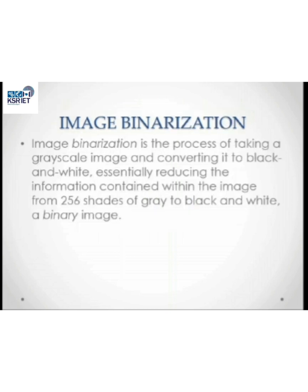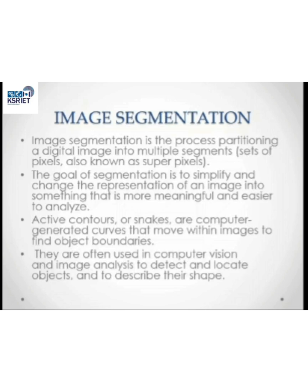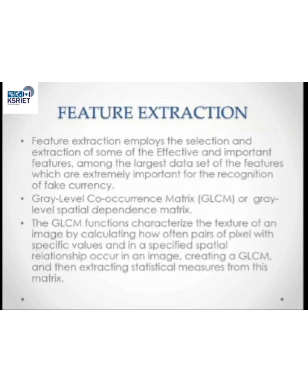Image binarization is the process of taking a grayscale image and converting it into a black and white image, essentially reducing the information contained within the image. Image segmentation is the process of partitioning a digital image into multiple segments to simplify and change the representation of the image. Feature extraction uses the Gray Level Co-occurrence Matrix (GLCM), which characterizes the texture of an image by calculating how pairs of pixels with specific values occur in a specified spatial relationship.